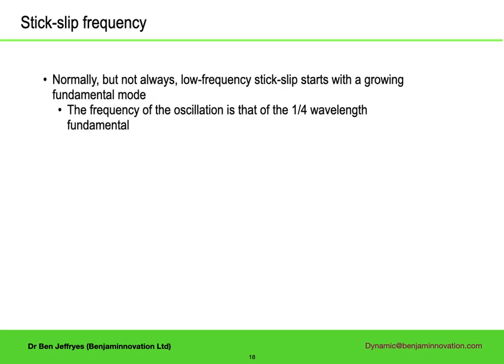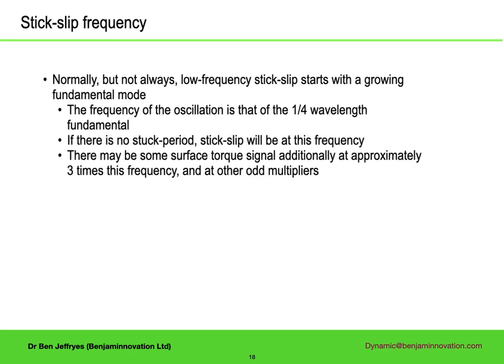If all you have is surface data, can you tell the difference between the situation where the drill string is not sticking and when it spends a while not moving? Most low frequency stick-slip is at the fundamental, the quarter-wavelength mode. If you have just the fundamental mode, or the fundamental with some higher modes but everything is linear — no sticking — and you look at the frequency spectrum of the surface torque data, you will see spikes spaced out roughly like the odd numbers: odd numbers, no even numbers.